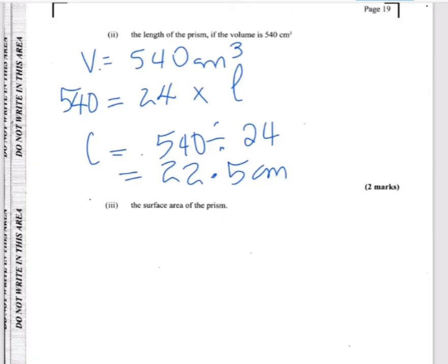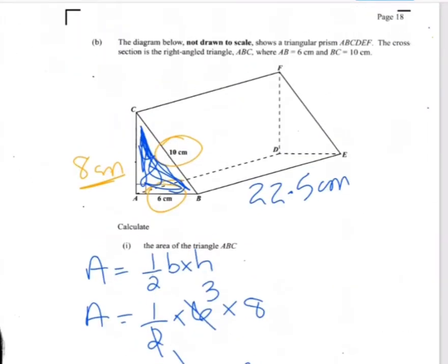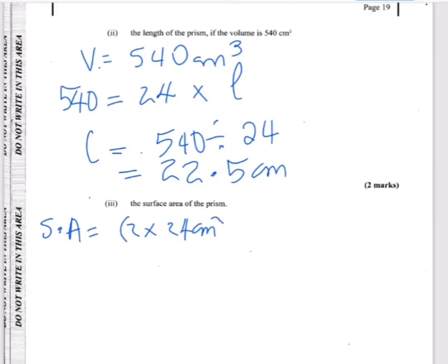Let's go to the next part of the question: calculate the surface area of the prism. When calculating surface area, it's about looking at all the sides, finding the area of each side, and adding them all up. On our diagram we have two triangles, and we've already calculated the area of one triangle — both triangles are the same because it's a cross-section. So we start with two times 24 centimetres squared for the area of the two triangles.